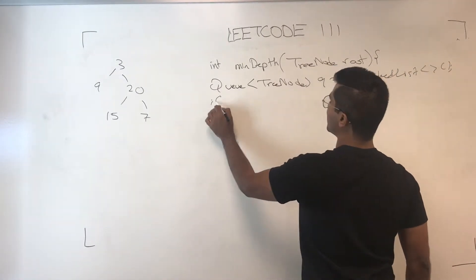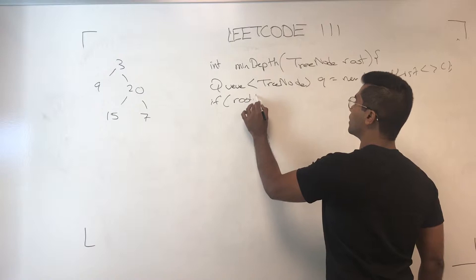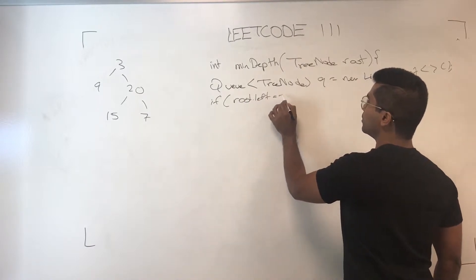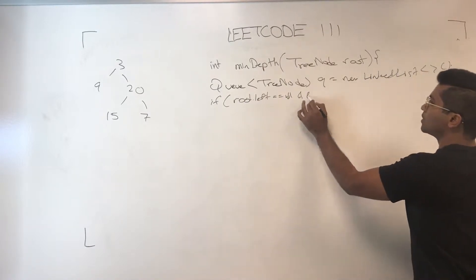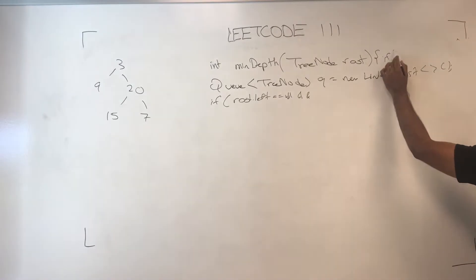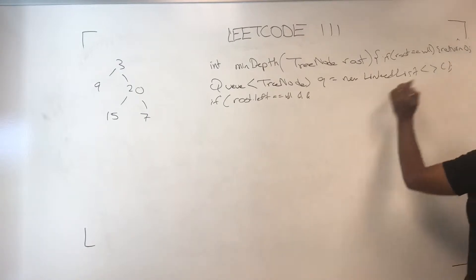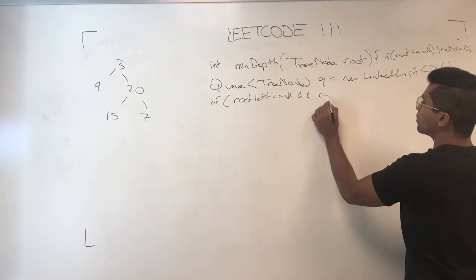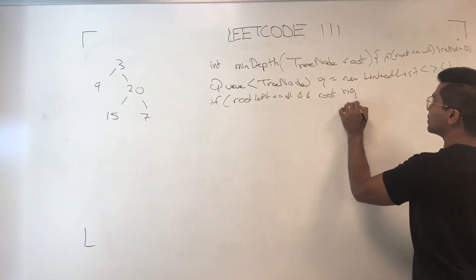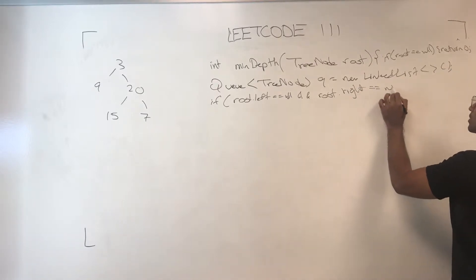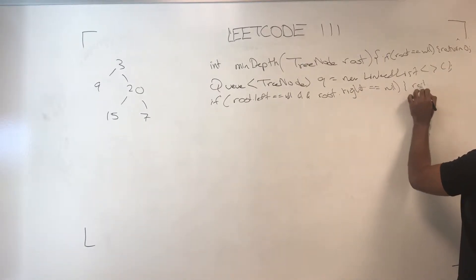Once that's done, if root is null, return 0. But if the left is null and root's right is null, return 1.